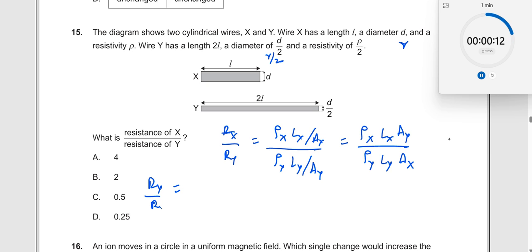So RX by RY. Let me write it properly. So ρX, what is ρX? ρ. What is LX? L. And AY, what is AY? A is nothing but π times (R/2)², the whole square, divided by...